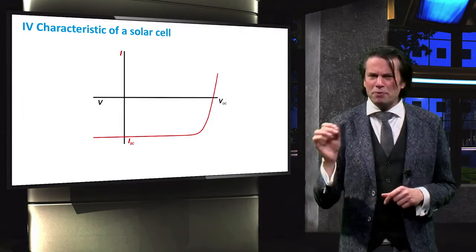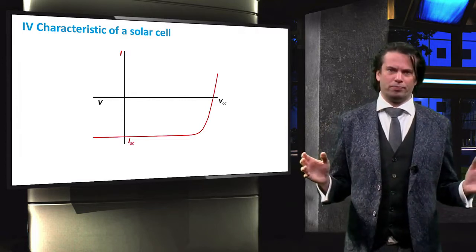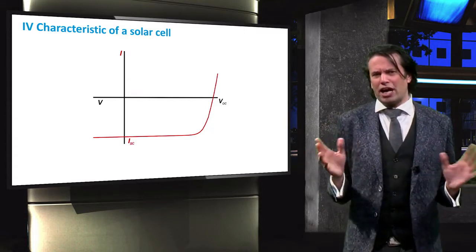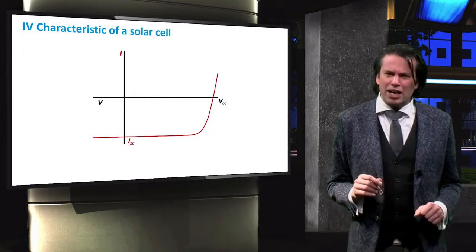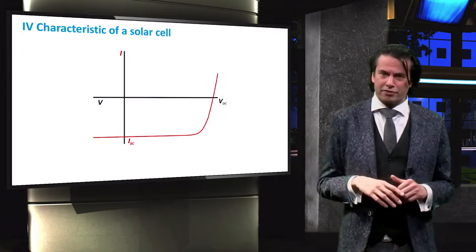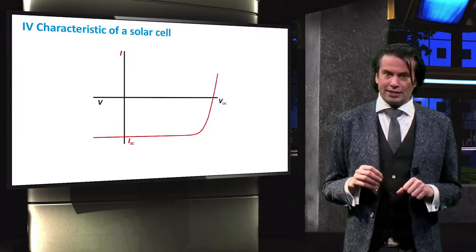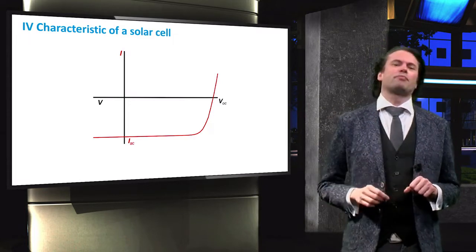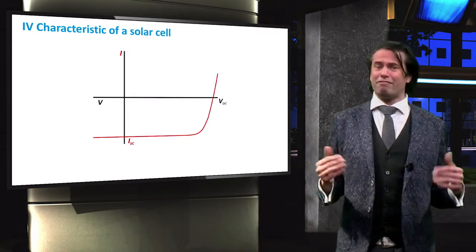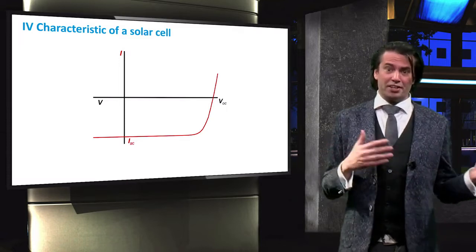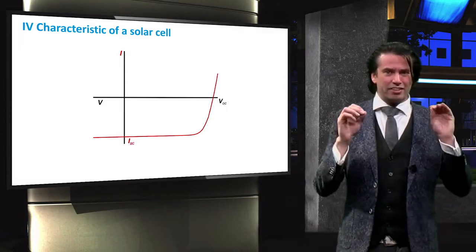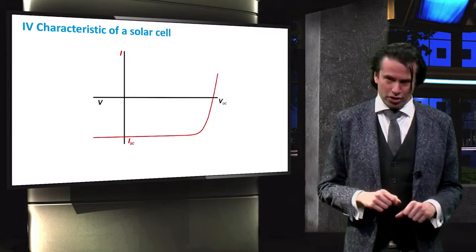So how can we represent this as a circuit model? Those of you with an electrical engineering background may already realize that this resembles the characteristic of a diode, and that is exactly correct. A solar cell is in fact a diode, and if the solar cell were in the dark, it would act electrically just like any other diode.